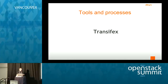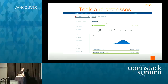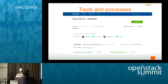Our primary workhorse now is the Transifex platform, where most of us do the actual translation. After logging in, you should find the OpenStack organization, and you'll get to a screen where you can select your project. For example, we focus mostly on the Horizon project, which is the OpenStack dashboard. Then you select your language, join a language team if you haven't done so already, and just click Translate.